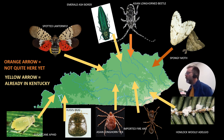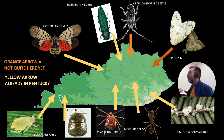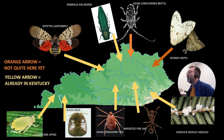This slide had to be redone because things have changed since we first made this video. This map shows that Kentucky is a place where a lot of invasive species are coming at once — creatures coming from the north and from the south, many that have been in those regions for years and are now arriving all at the same time. The yellow arrows show creatures already here; the dark orange arrows show things not quite here yet that we're concerned about.